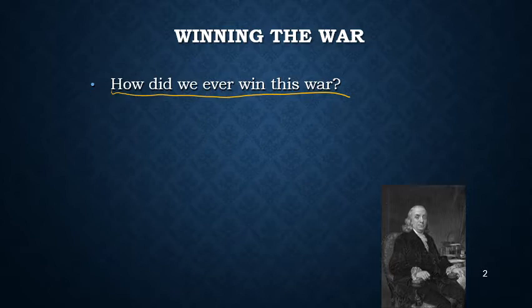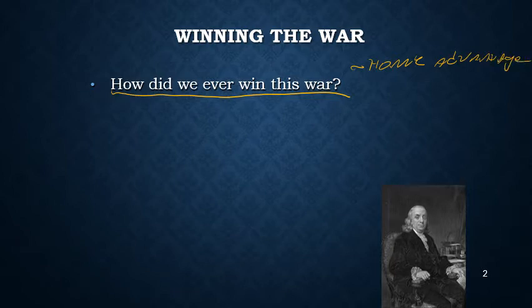The United States had no business winning a war against Great Britain. The British outperformed us militarily — they won more battles, fought more skillfully, had more weapons, and were more experienced. So how did we win? Number one: we were fighting on our own turf — home field advantage. We knew the land, which allowed us to use guerrilla warfare tactics — sneak attacks on the British, small raiding parties taking guns and food — and that worked to our advantage.